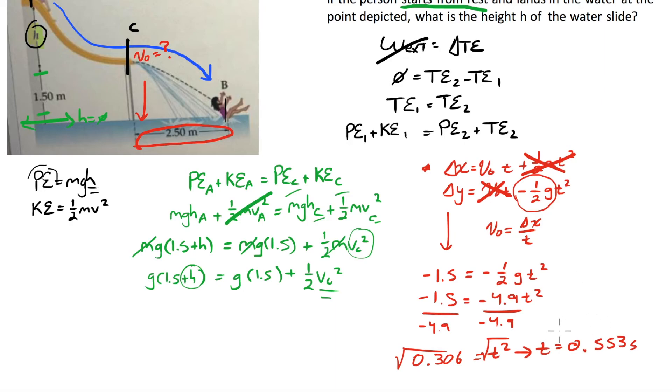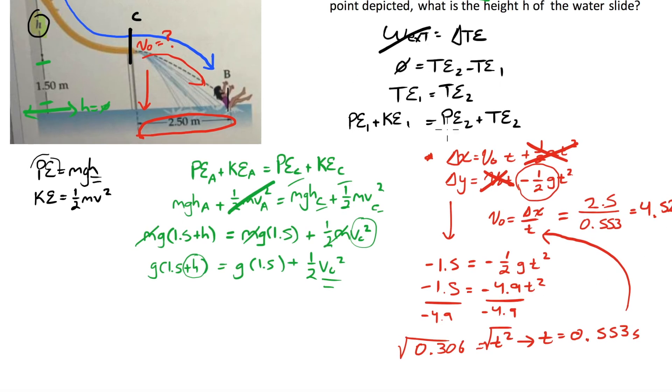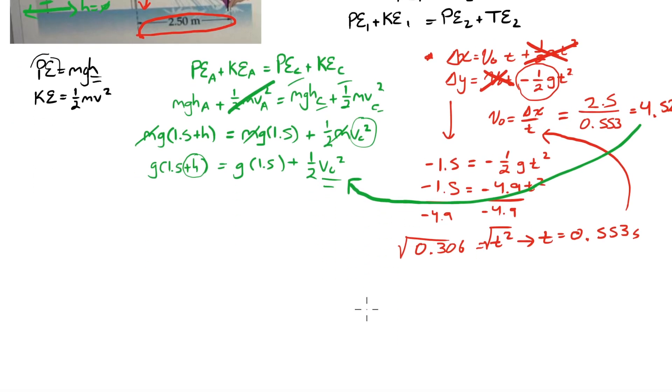So what I'm going to do is I'm going to take that and put it right in there. My initial velocity for that trip, it's going to be delta x 2.5 over 0.553. That initial velocity will be 4.52 meters per second. Great. That guy, you betcha, is going right in there. And we're going to be good to go here.